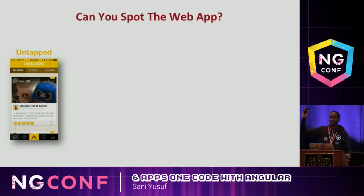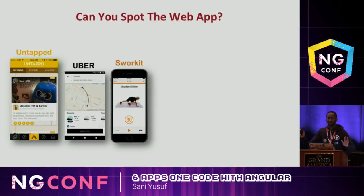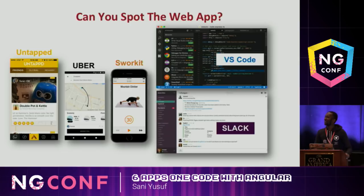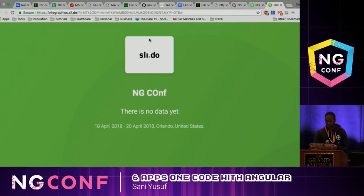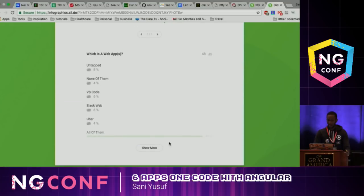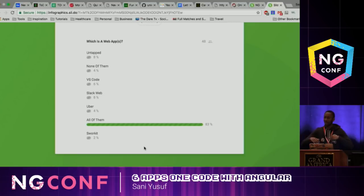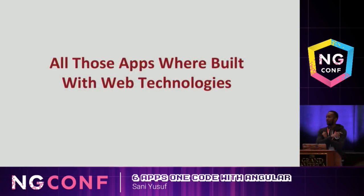The first option is Untapped beer - anybody know Untapped? We've seen all the alcoholics in the room. Uber - we all know Uber. Sworkit - anybody? Slack - anybody know Slack? Visual Studio Code - anybody know this one? So these are your options. Go vote, you can vote multiple choices. So while everybody's voting, we have like 48 people voting. The main point of this is not to show you who's right or wrong, it's more about the distribution of opinion. Some people think this is the web app, some people think all of them are.